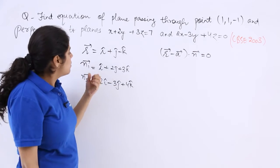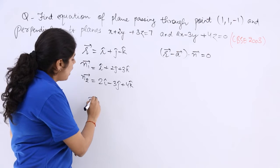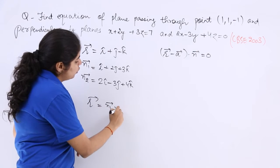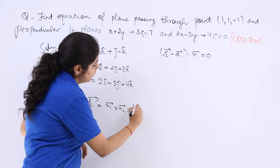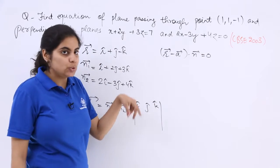Now r minus a means r has to be found out first, which is the position vector. Now r vector is n1 cross n2; that means you have to find out the cross product of these two normals.